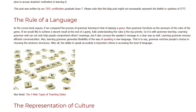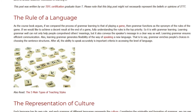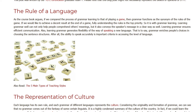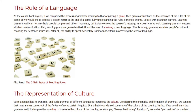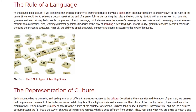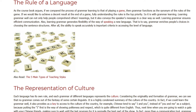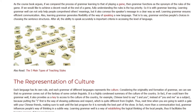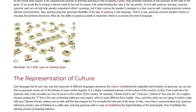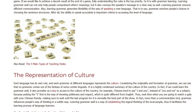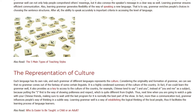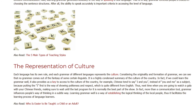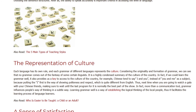The Representation of Culture. Each language has its own rule, and each language's grammar represents the culture. Considering the originality and formation of grammar, we can see that no grammar comes out of the fantasy of some certain linguists. It is a highly condensed summary of the culture of the country. In fact, if we could learn the grammar well, it also provides us a key to access the culture of the country. For example, Chinese tend to say 'I and you' instead of 'you and me' as a subject, because putting 'I' first is the way of showing politeness and respect, which is quite different from English.